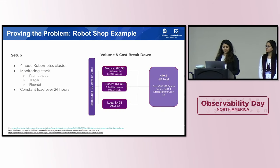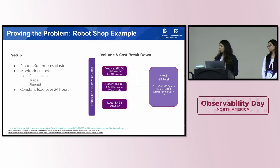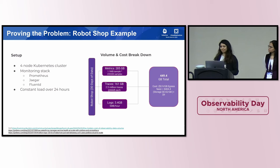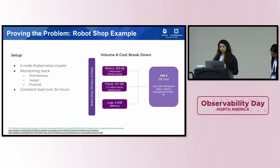If we translate this into an example: a single application deployed in a four-node Kubernetes cluster with a pretty standard monitoring stack — Prometheus, Jaeger, and FluentD — running constant load over 24 hours. Looking at the volume and cost breakdown for 30 days of data, adding up metrics, traces, and logs, it comes to 450 GB per month. Adding up just egress and storage costs, it comes to around $50 per month. But this is just one single application over one month — add scale factors with number of environments, services, and increasing request volume, and it will go into thousands of dollars.